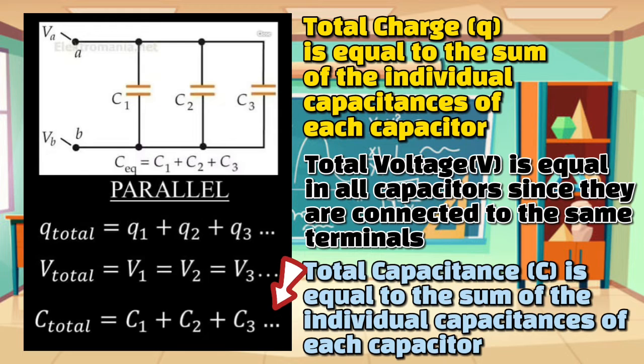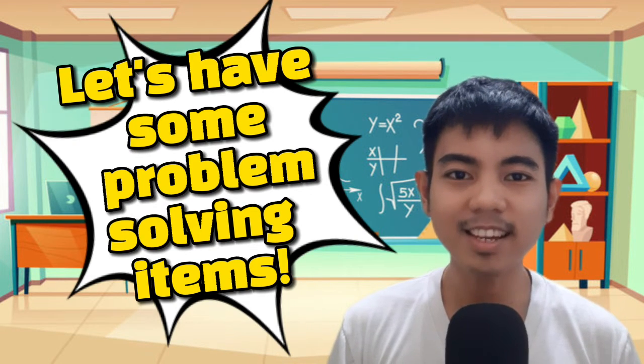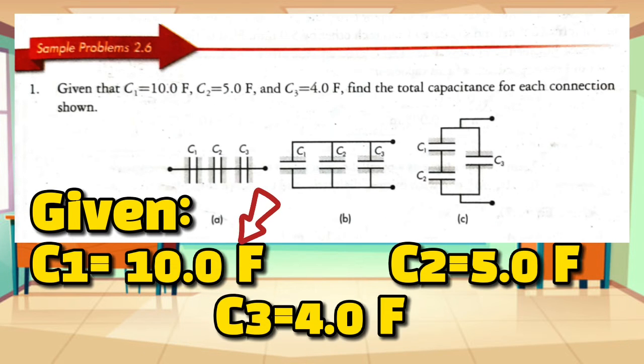These are the relationships due to the fact that all capacitors are connected to the same terminals. Now, let's try some problem-solving items. The problem now says we are given three capacitors with the following value of their capacitance. For number one, 10 farads. For number two, 5 farads. And for number three, 4 farads. We are to find the total capacitance for each connection that is shown in the diagram below.